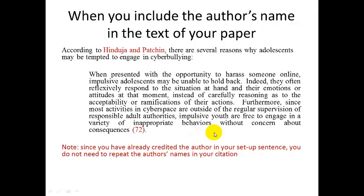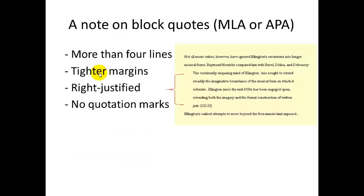Notice with that last quotation I don't have quotation marks at the beginning and the end — that's because this quotation is so long that I'm using what's called a block quote. If you have a quotation that's longer than four lines, you can do it as a block quote, which means you'll have tighter margins, making it look like a block. There are no quotation marks at the beginning or end. But the actual in-text citation is exactly the same, whether you're using a normal quote or a longer block quote in either MLA or APA style.